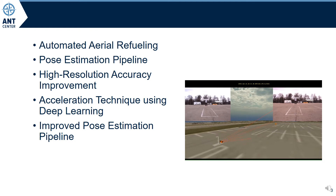In the rest of this video, we'll give a quick overview of automated aerial refueling. Next, we'll discuss the stereo vision pose estimation pipeline that you've just seen in action. We explain how high-resolution cameras improve accuracy for long-range pose estimation, and show some example point clouds. Finally, we'll show a deep learning solution using a convolutional neural network to accelerate this process.